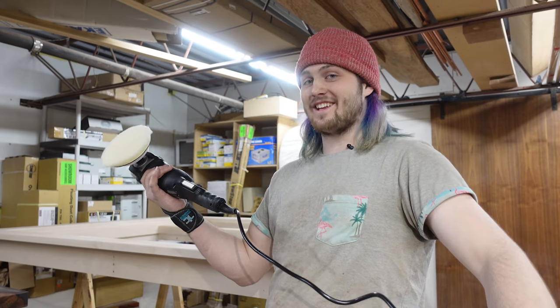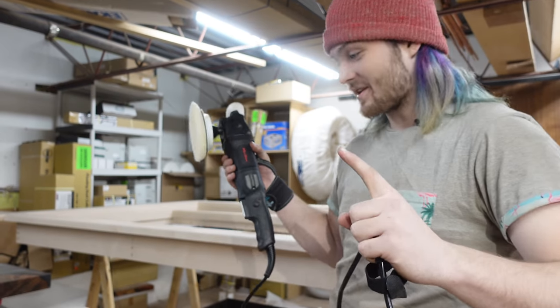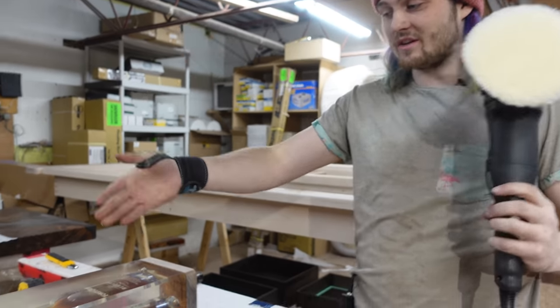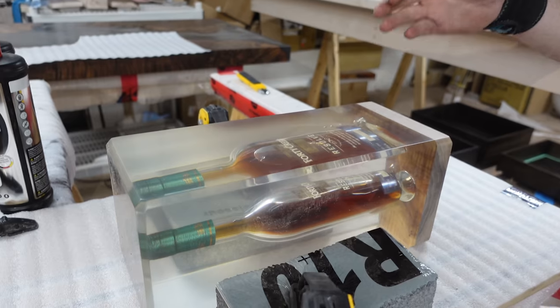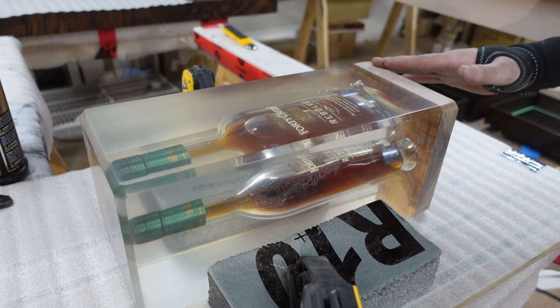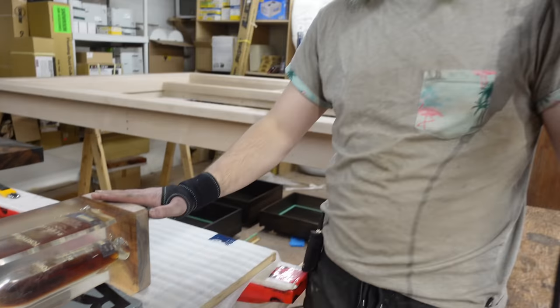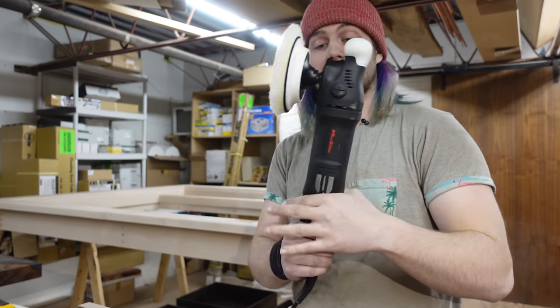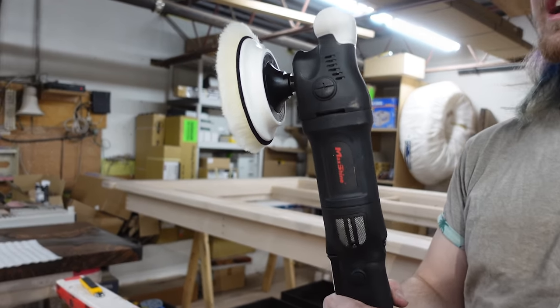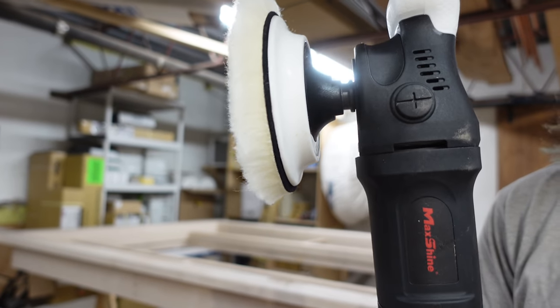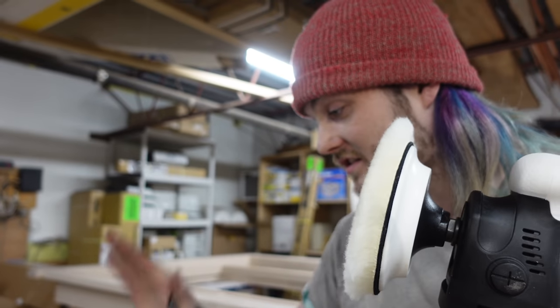We don't actually know what we're doing yet, but this is the first attempt that we're going to have. We did what we normally do for our bottle castings, and we sanded this all the way up to 4000 grit. We haven't put any polishing compound or anything on it yet, but we just got this bad boy.